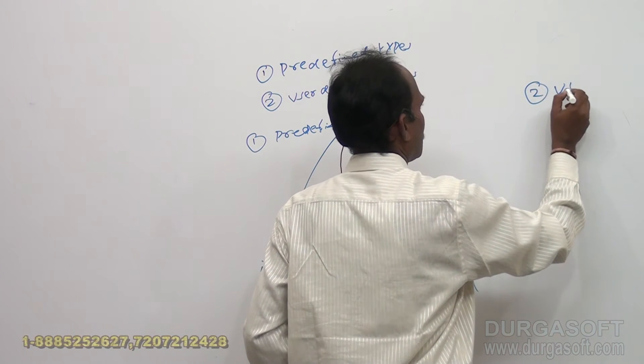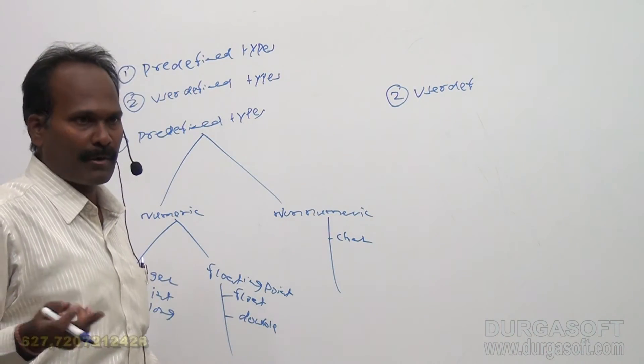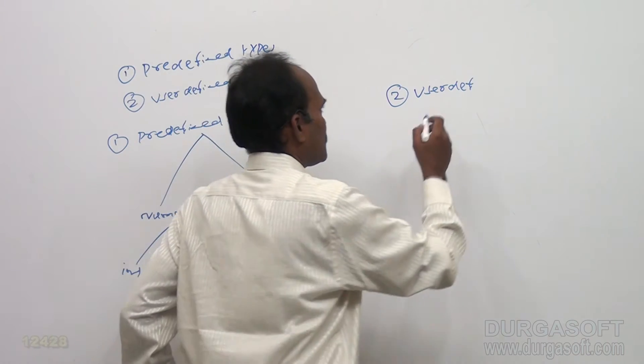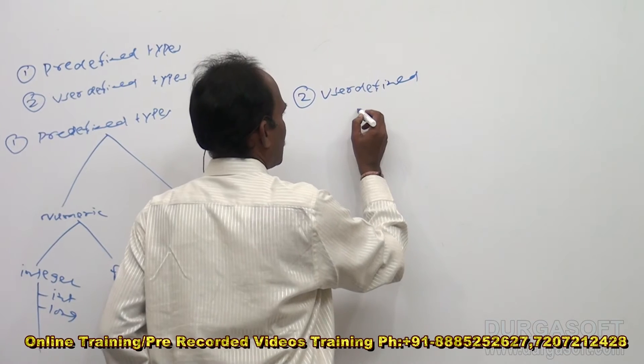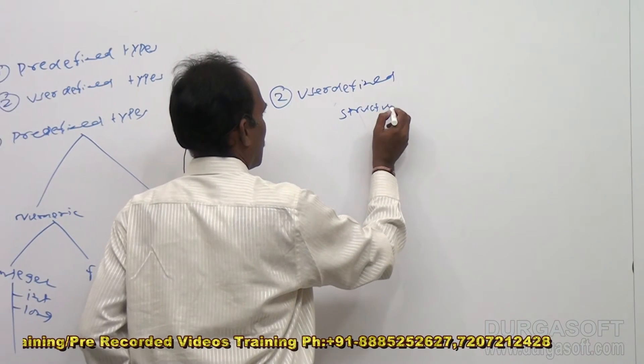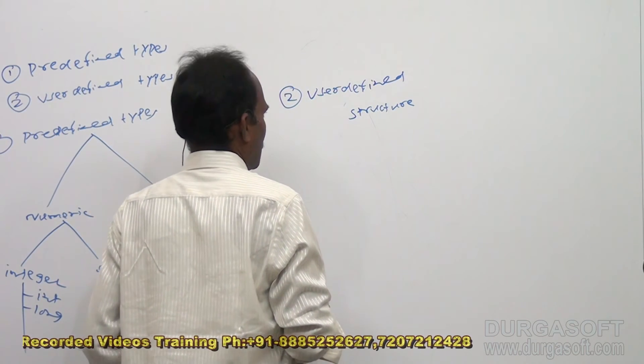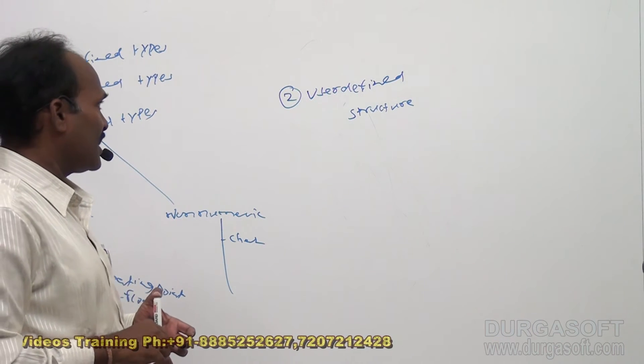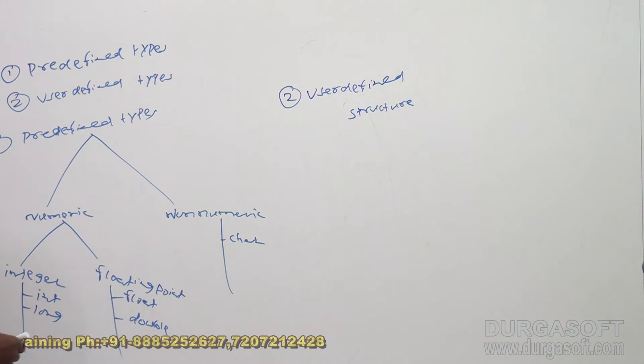User defined types, so all user defined types are defined by normal developers. So they are not developed by C language developer. So they have to be defined by developers. So the user defined types, so what are the user defined types? Normally in C language we are going to have one user defined called structure. Structure. Okay, so this is a user defined type. So the C language does not support classes concepts, only structures are there in C language, so which comes under user defined category. Okay, so when coming to.